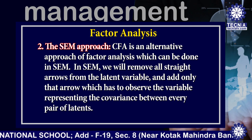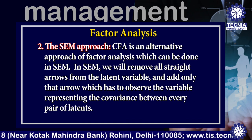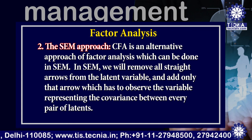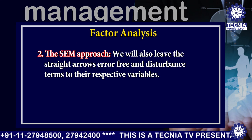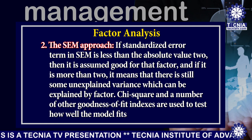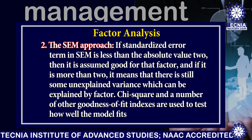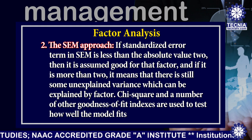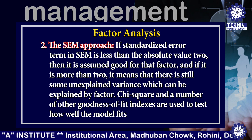The second approach is the ACM approach. CFA is an alternative approach of factor analysis which can be done in ACM. In ACM we remove all straight arrows from the latent variable and add only those arrows which represent the covariance between every pair of latents. We also leave the straight arrow error-free and disturbance terms to their respective variables. If a standardized error term in ACM is less than the absolute value of 2, then it is assumed good for that factor. If it is more than 2, it means there is still some unexplained variance which can be explained by the factor. Chi-square and a number of other goodness-of-fit indexes are used to test how well the model fits.